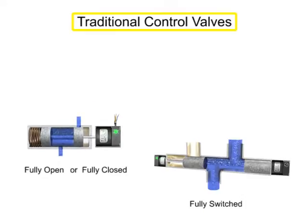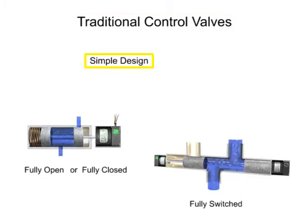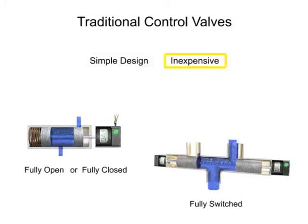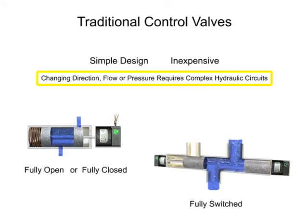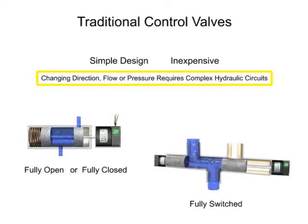Traditional control valves are of simple design and capability. Changing direction, flow, or pressure during machine operation would require a complex hydraulic circuit. Each desired direction, flow, or pressure would require an individual traditional valve to control it.